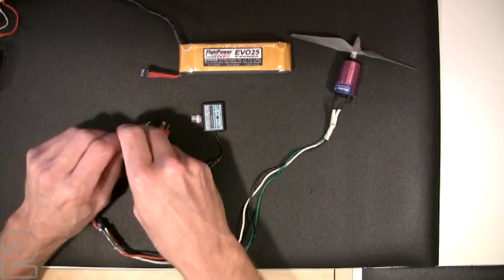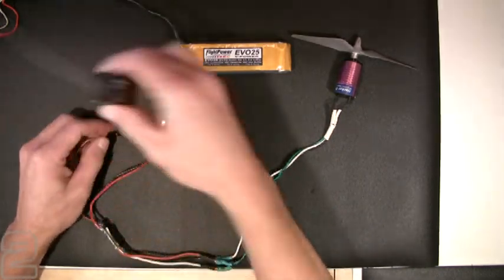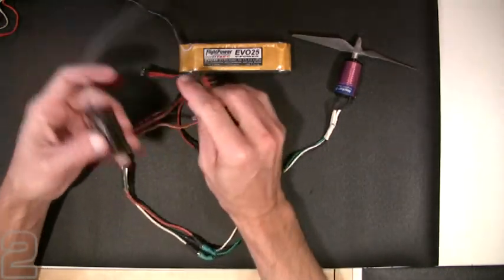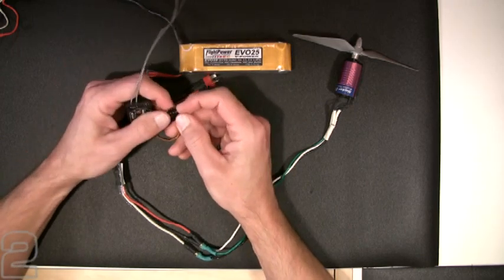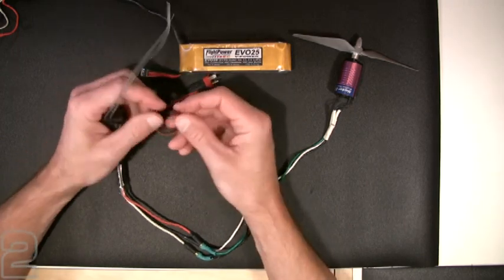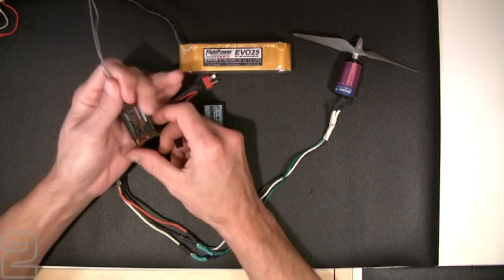I'm going to switch over to the Futaba receiver now. Futaba handles things a little differently. Most ESCs you buy are not going to be keyed - the three-pin connector is going to be a Z style like this.